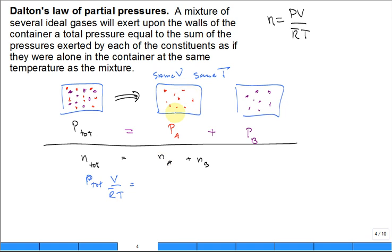A behaves as an ideal gas, the same volume, same temperature. So you have the pressure exhibited by A times V over R bar T plus pressure of B, V over R bar T.